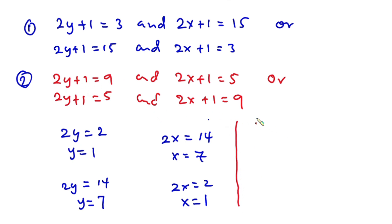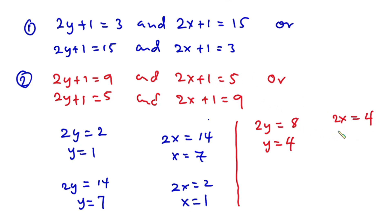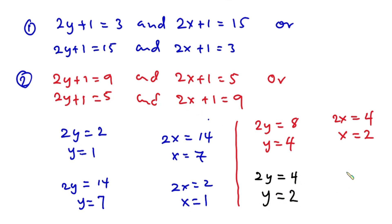From Case 2, first sub-case: 2y + 1 = 9 gives 2y = 8, so y = 4. Then 2x + 1 = 5 gives 2x = 4, so x = 2. Second sub-case: 2y + 1 = 5 gives 2y = 4, so y = 2. Then 2x + 1 = 9 gives 2x = 8, so x = 4.